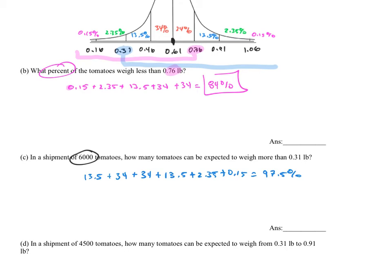So what do we do? We take the percentage as a decimal. The percentage as a decimal is 0.975. And then we multiply it times the quantity, which is 6,000 tomatoes. Do that in your calculator now. Please double check my math. I'm getting 5,850 tomatoes. Approximately 5,850 tomatoes would weigh more than 0.31 pounds.